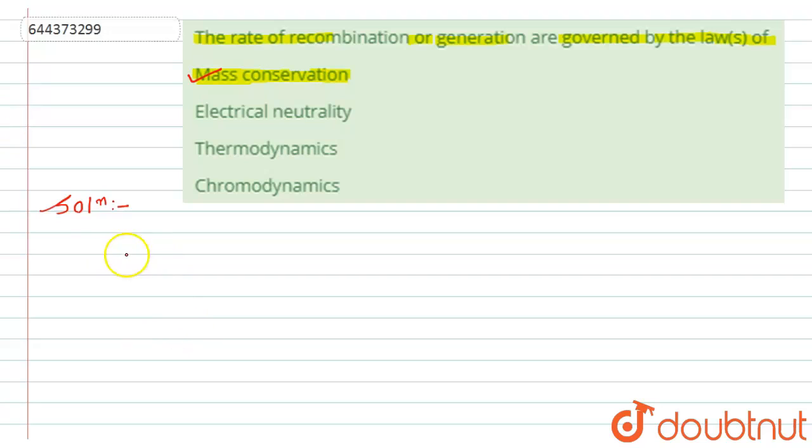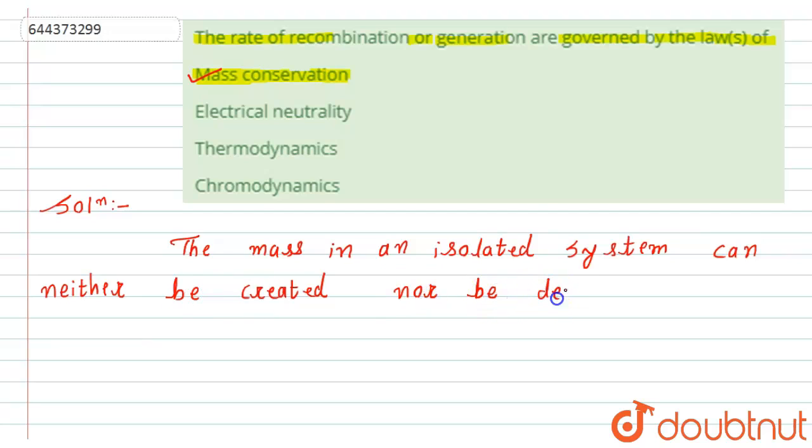So mass conservation law states that the mass in an isolated system can neither be created nor be destroyed, but can be transformed from one to another state. Okay, from one to another state.